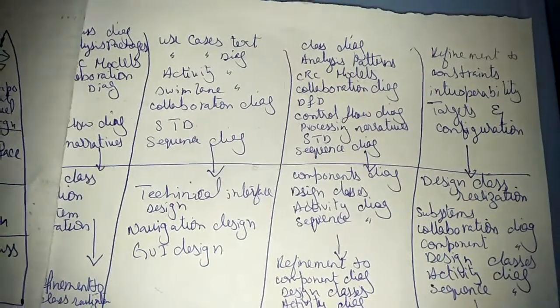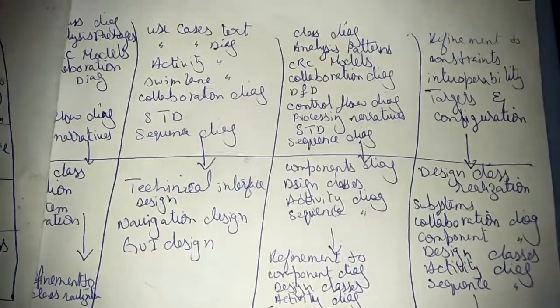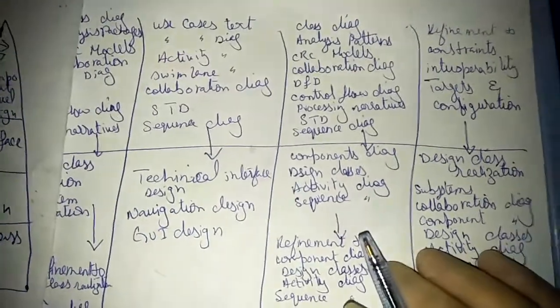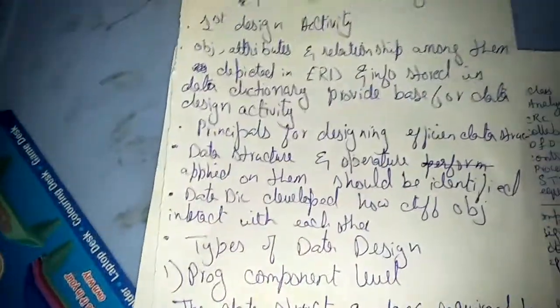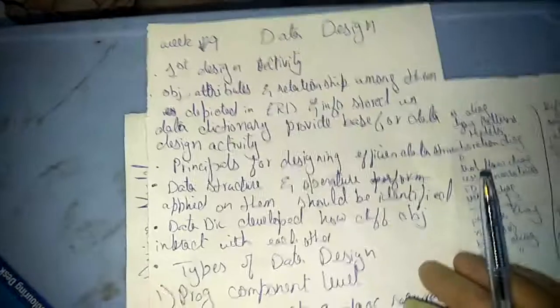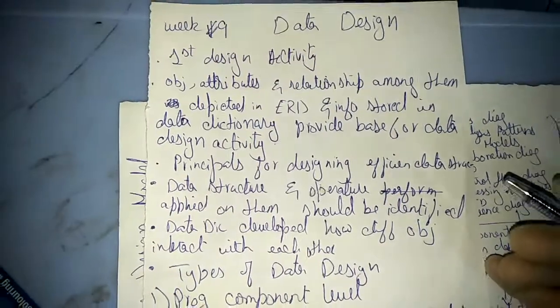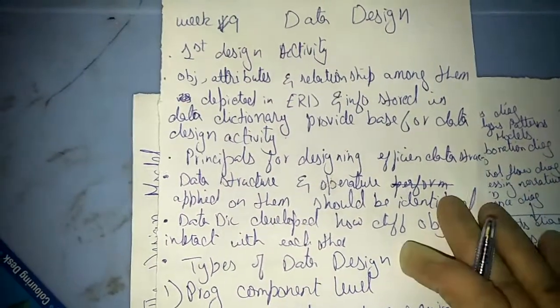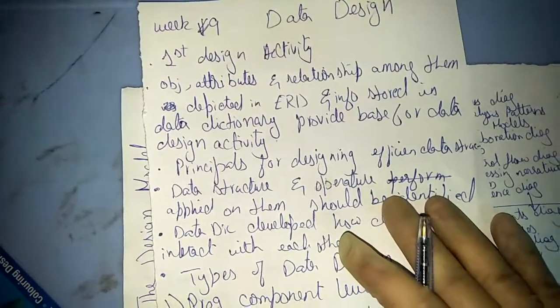Deployment level elements refer to deploying the software in the physical environment. At this level it is a design class element. It maps to architecture design, interface design, and component level design.